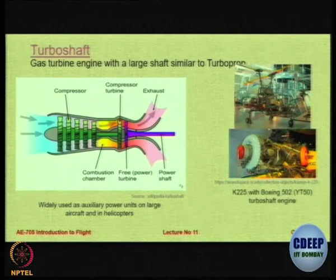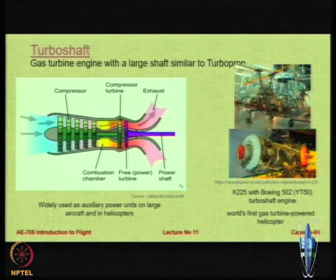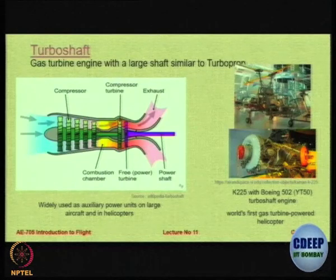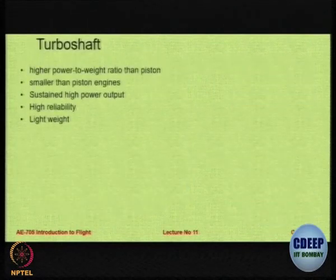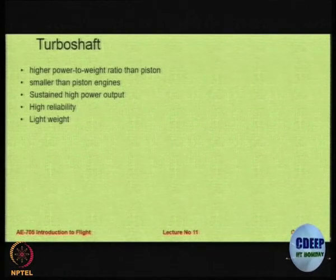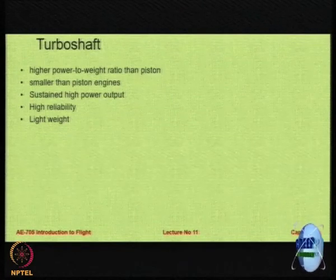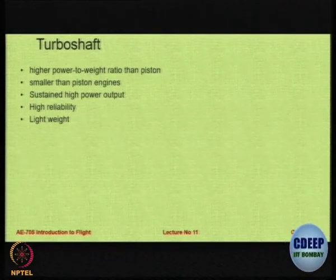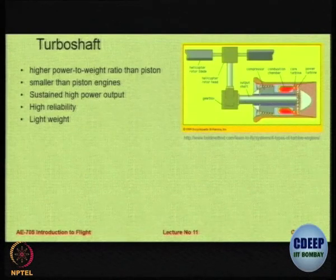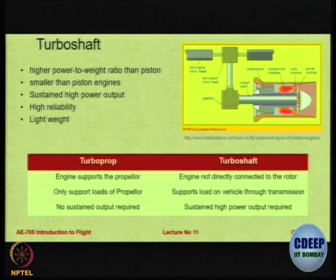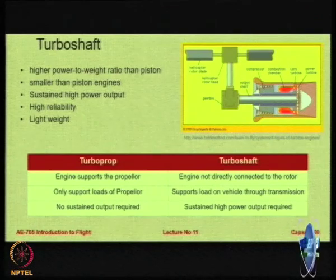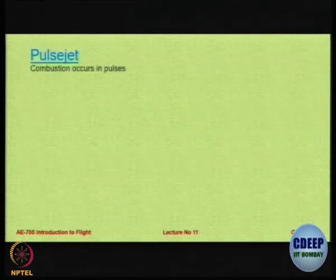This is the world's first helicopter which had a turbine-powered engine. Before this, helicopters were generally only piston-prop powered. This was the first one to have a gas turbine in a helicopter, and that was a turboshaft. You get a higher power-to-weight ratio than a piston because you are not extracting any thrust from the propeller. It becomes smaller and more compact than piston engines. As you can see, the shaft is tilted and mounted to the helicopter rotor. This is the difference between turboprop and turboshaft for you to consider.